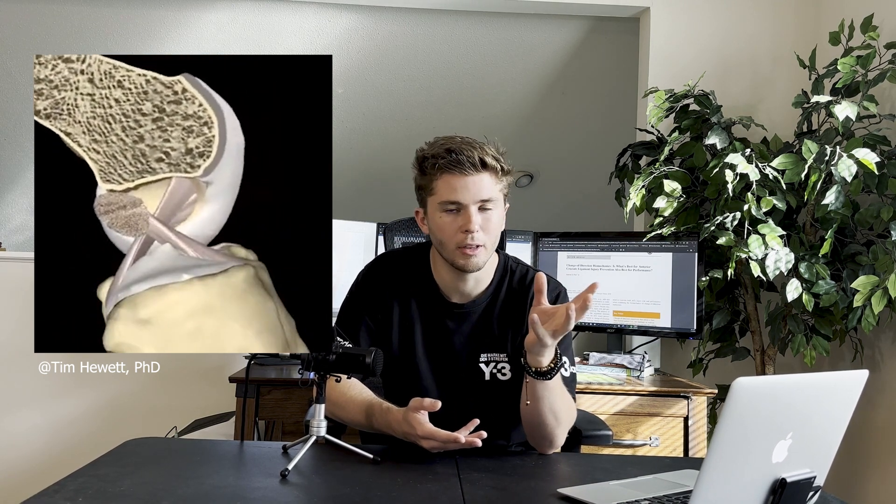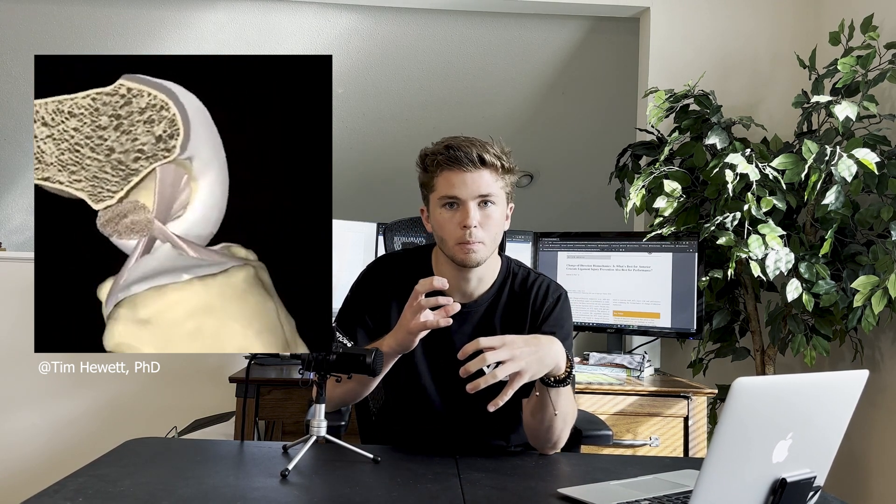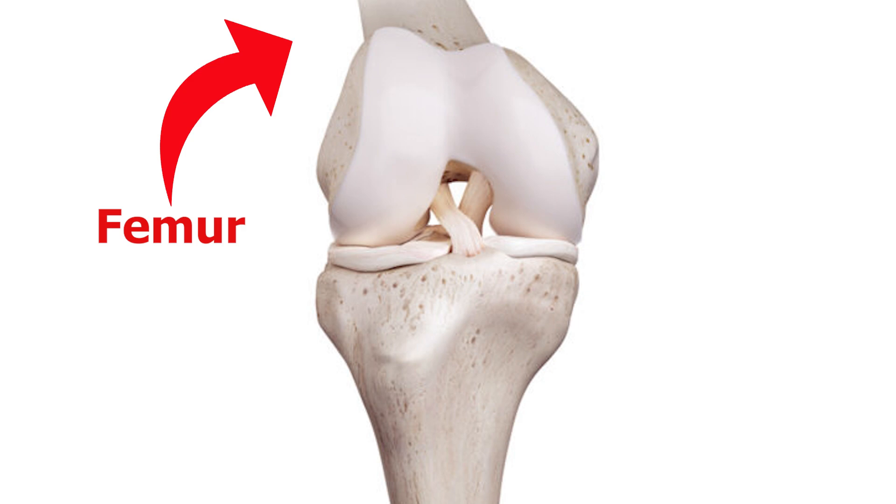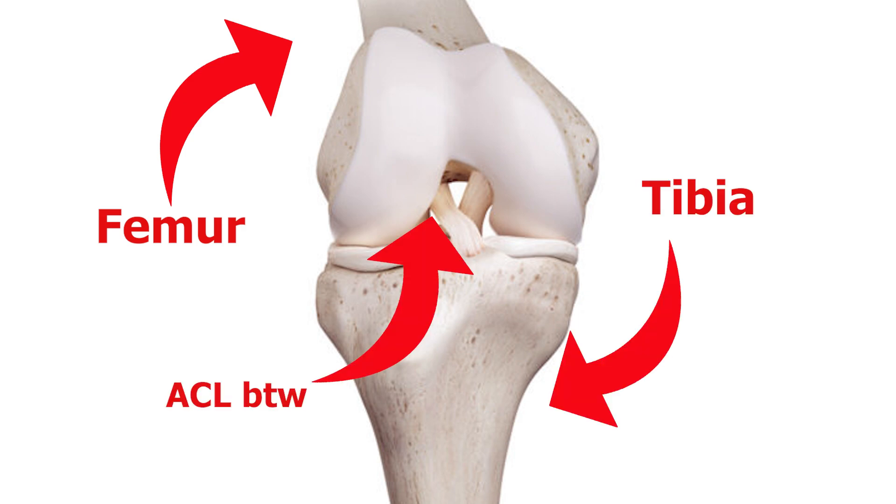The anterior cruciate ligament, otherwise known as the ACL, is located within the knee and is one of the most important ligaments for keeping the structure of the knee. You can find this ligament from the posterior femur connecting to the anterior tibia — basically going from back to front. The ACL is a ligament, which is just connective tissue that connects bone to bone, connecting the femur to the tibia right there in between the knee.